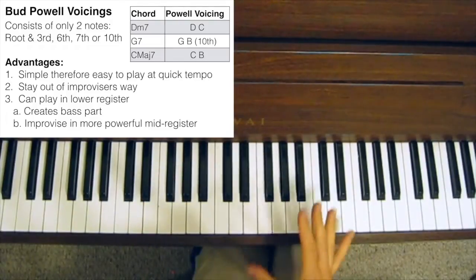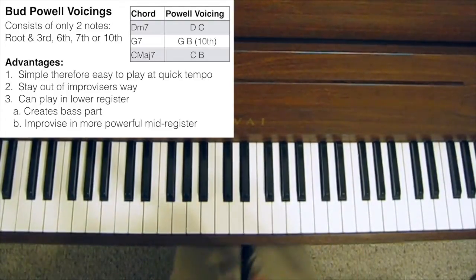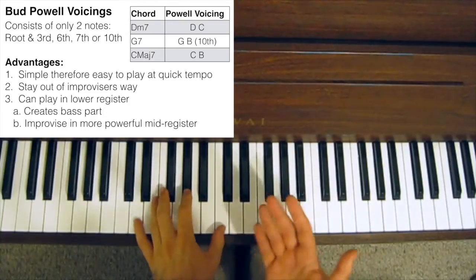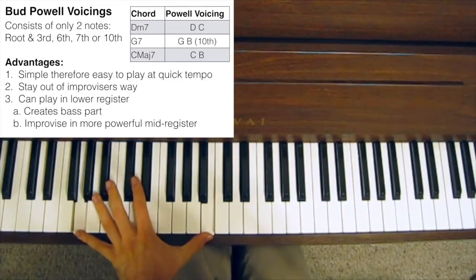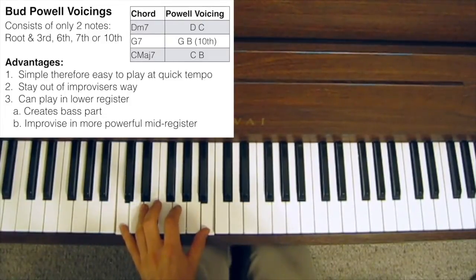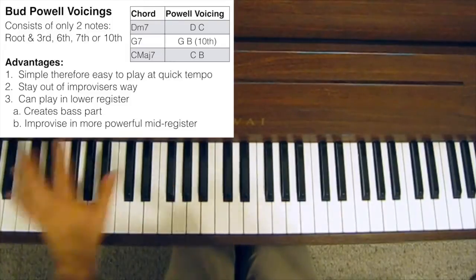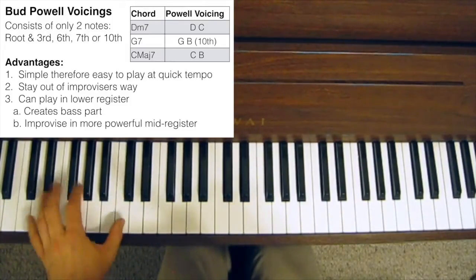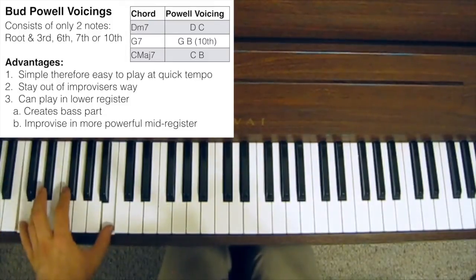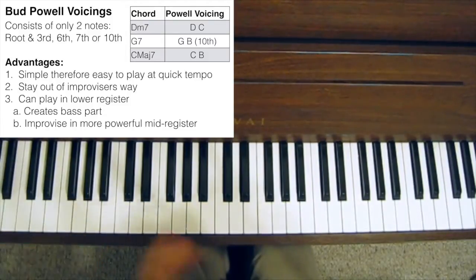Now, the third and final advantage of this type of chord voicing that I'll mention here is that because, again, it's so simple, you're only playing two notes, and those notes are generally quite far apart from each other, like the 7th, the 10th, and the 7th again. That means you can play them lower down on the piano or in a lower register. And it still sounds alright.